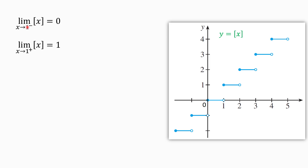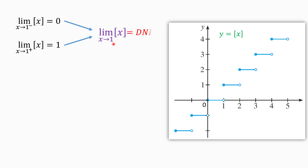You can see that the left limit and right limit of this function at 1 are not equal to each other. We know that if the left limit and right limit are not equal, the limit of the function at that point does not exist. So the limit of the greatest integer function of X as X approaches 1 does not exist.